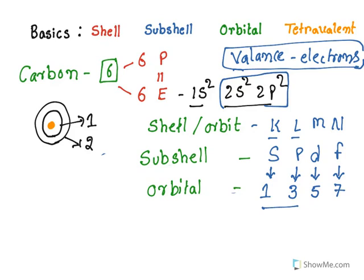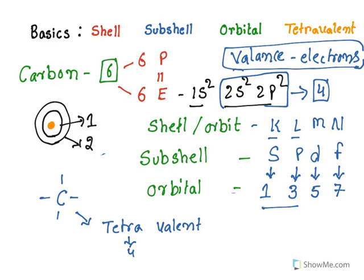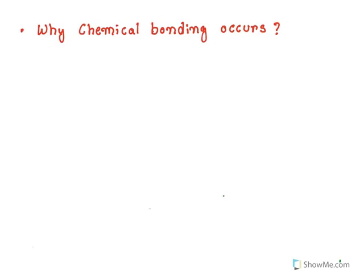Coming back to carbon — in the valency shell, it has got four electrons. That means carbon can form four covalent bonds. Because of this nature, it is known as tetravalent. Tetra means four; valent means the number of valency electrons. That is why it is called tetravalent. Now, why does chemical bonding occur at all? Why do atoms need to participate in chemical bonding? What is the logic behind it?